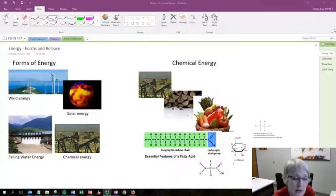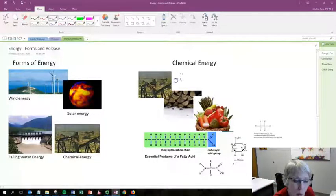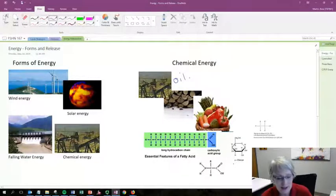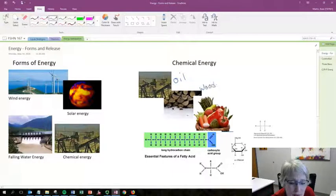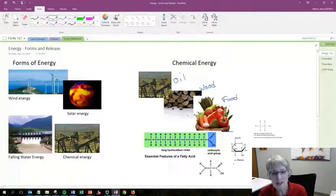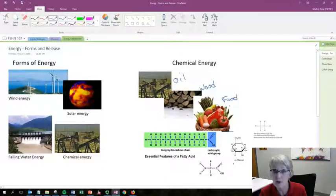When you think about chemical energy, a lot of people think about oil, and it is a big source of chemical energy. But we have other sources. We have wood, we have food. Chemical energy is just energy that's stored in the bonds of chemical compounds.